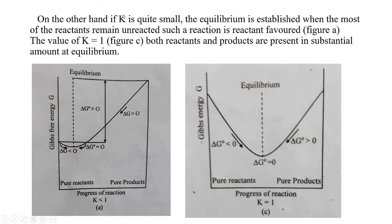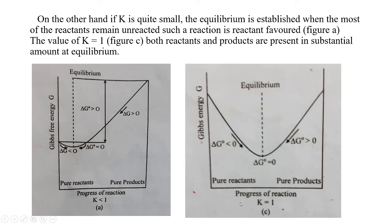On the other hand, look at this figure. If the K value is less than 1, the equilibrium is established when the reactants remain largely unreacted. Now look at the last figure. When K value is equal to 1, in such a case both reactants and products are present in substantial amounts at equilibrium.